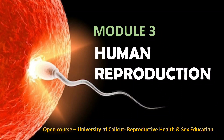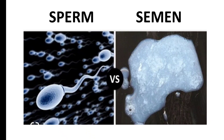Hi everyone, we are continuing Module 3, that is Human Reproduction. Today we are going to discuss the difference between sperm and semen. As we discussed in the previous class, sperm is the male reproductive cell or gamete — the male reproductive gamete, which in Tamil is called sperm.